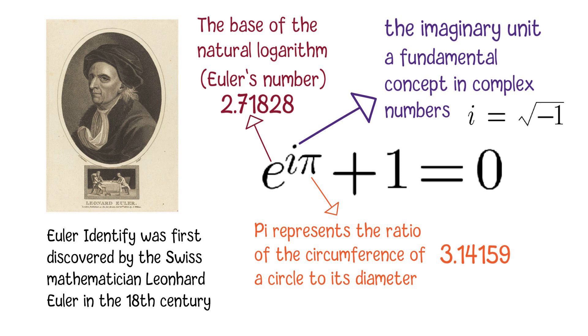This equation states that if you take Euler's number E, raise it to the power of I pi, and then add 1 to it, the result is equal to 0.